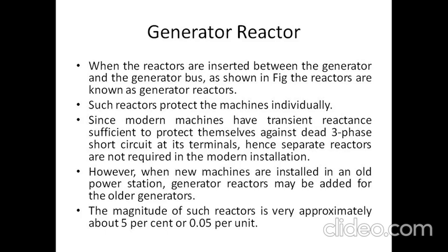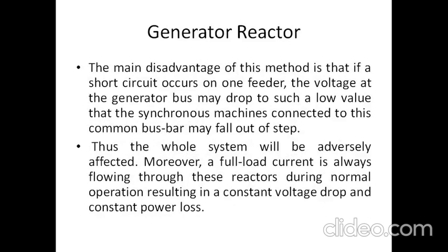When new machines are installed in an old power station, generator reactors may be added for the older generators which are already installed. Where a new alternator is installed, we have to insert new reactor coils. The magnitude of such reactors is very approximately about 5% to 0.5 per unit.